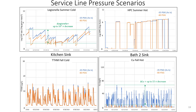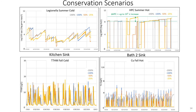Similarly, results from changing the service line pressure from 35 psi to 80 psi are shown for Legionella, HPC, copper, and TTHM at the kitchen sink and bath 2 sink for summer and fall seasons in both cold and hot systems. Legionella can decrease up to a factor of 10,000 when pressure is increased at the service line, and copper can decrease by a factor of 15 when service line pressure is increased from 35 to 80 psi. For conservation scenarios, HPC could increase up to a factor of 100 when conservation is at 25 percent — noting that HPC values are also reported in log form.